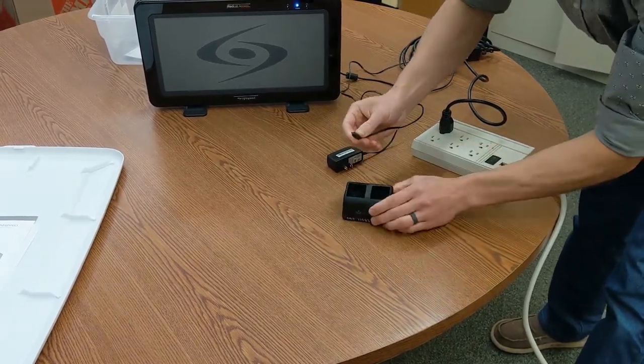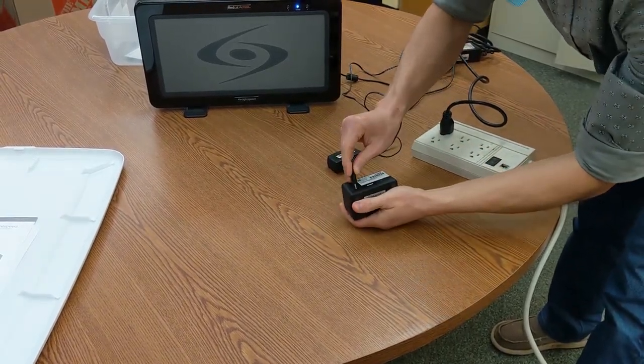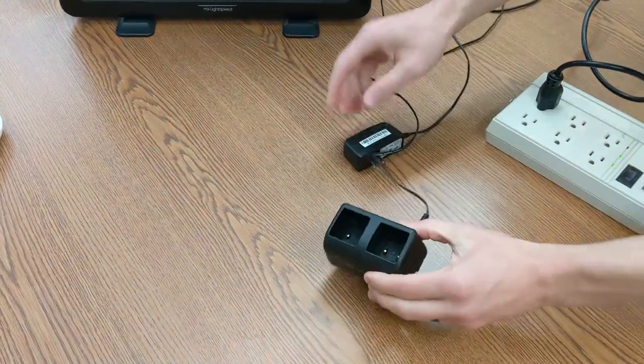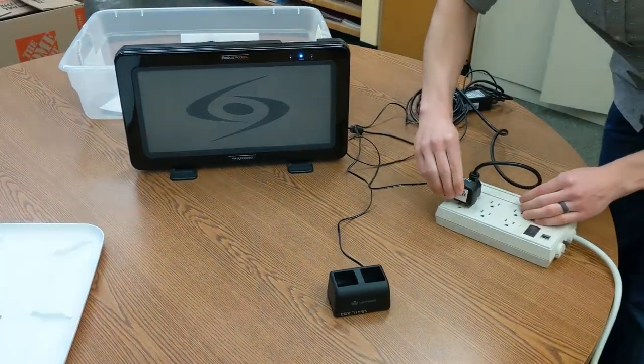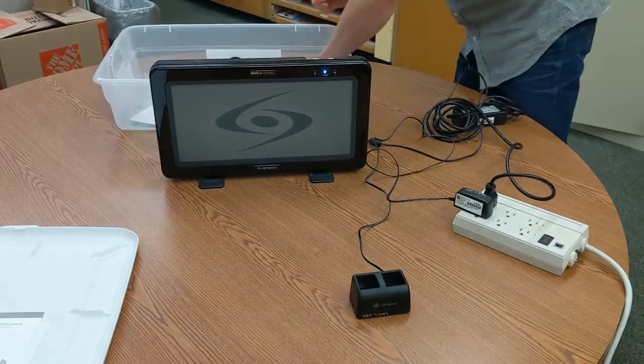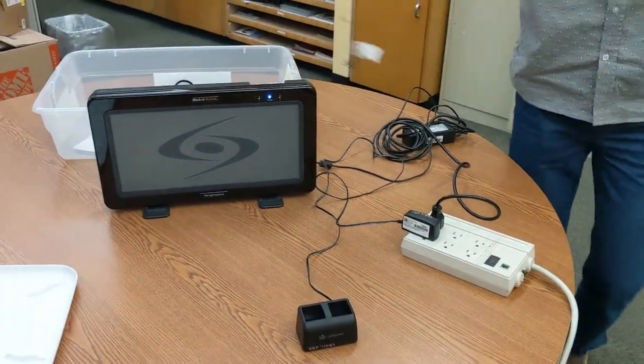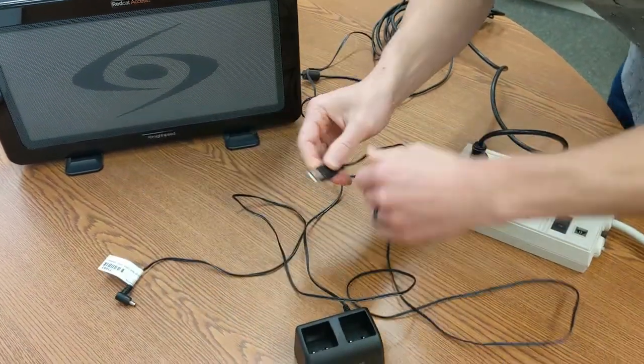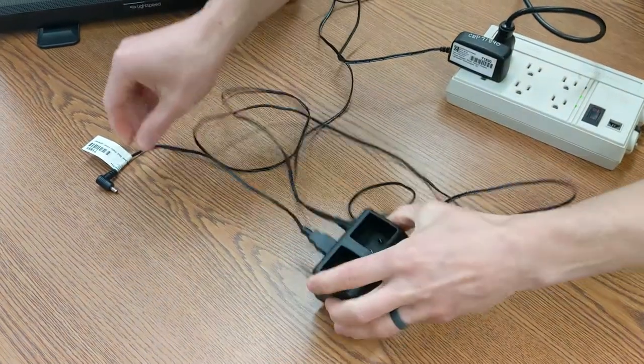First, plug the charging cable into the cradle. Then, take the separate charging cord for the pass-around mic, which looks like a USB on one end, and plug it into the cradle.